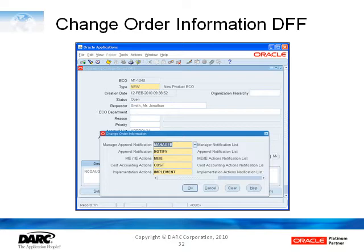As we move into our customized process, we talked about wanting to be able to route work to different people in the organization, so we needed a facility to identify those people. The facility we're using is the descriptive flex field in the change order header form. In this process we've got a manager approval and we're now pointing to a different approval list, which will have a different person or group of people in it.